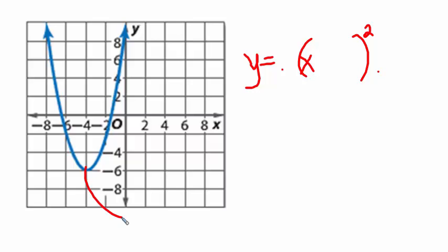Speaking of which, the vertex for this graph is at (-4, -6), keeping in mind they're numbering their axes by twos.